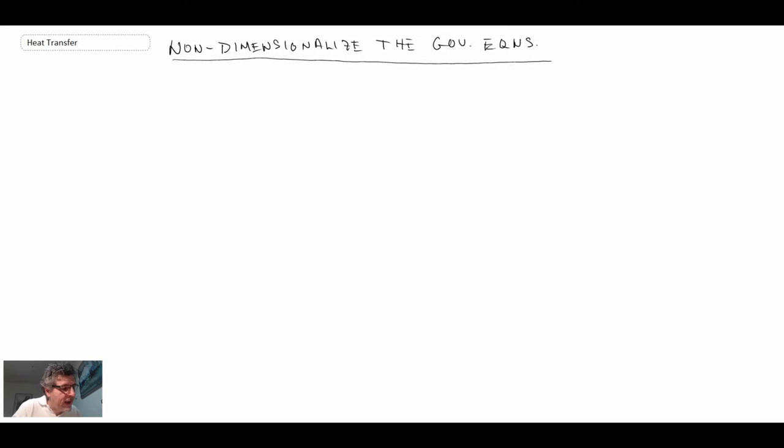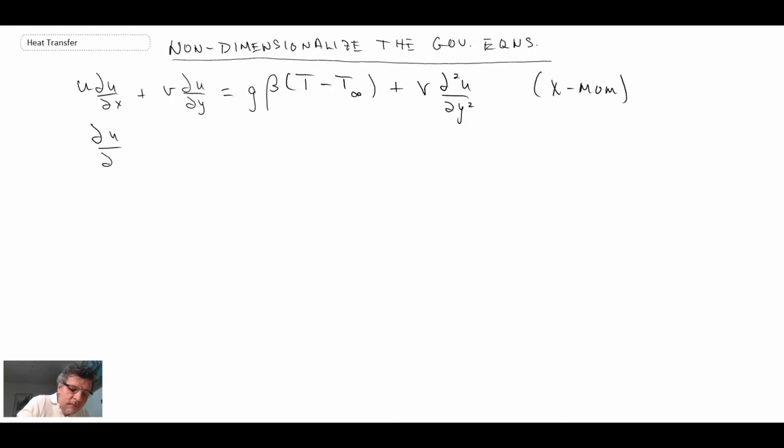And the governing equations that we had, I'll write them out. We had x-momentum, continuity, and energy. So those are the governing equations that we have. Now what we're going to do, we're going to introduce a non-dimensionalizing process.